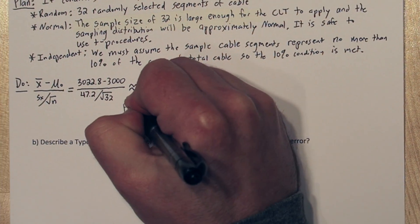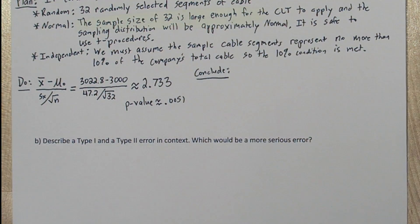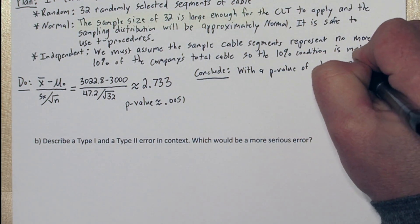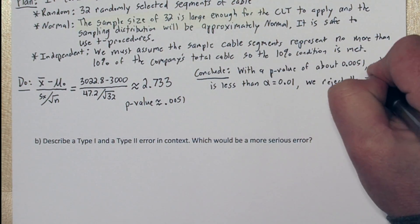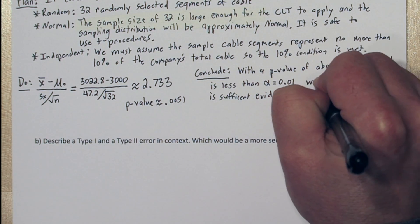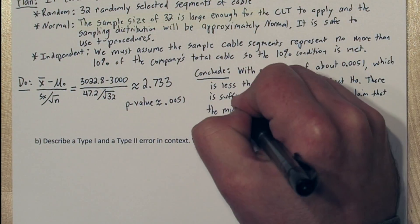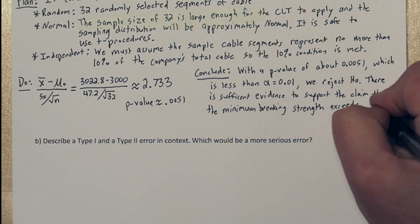Now we're ready to conclude. With a p-value of about .0051, which is less than alpha at .01, we reject the null hypothesis. There is sufficient evidence to support the claim that the minimum breaking strength exceeds 3000 lbs.